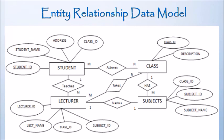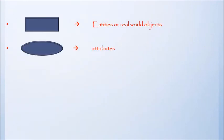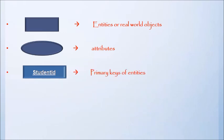In this diagram, entities or real world objects are represented in rectangular boxes. Their attributes are represented in ovals. Primary keys of entities are underlined. All these entities are mapped using diamonds. This is one of the methods of representing ER model. There are many different forms of representation. More details of this model we will discuss in upcoming lectures.